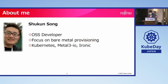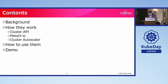My name is Shu Kun. I work for Fujitsu and currently focus on bare metal provisioning on Kubernetes. Today's contents: first, some background, then I will introduce how the three projects work and how to use them, and finally show you a demo.